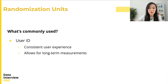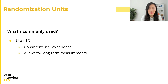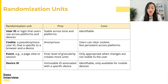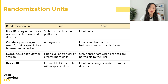Let's define the commonly used randomization units in practice. User ID is one of the most common. Using the user ID ensures a consistent user experience and allows for long-term measurements such as user retention and learning effects. But there are other randomization units suitable for different scenarios — a cookie, an event, a device ID, or even an IP address can also be used. Each of these options has pros and cons.